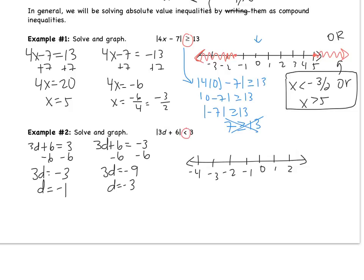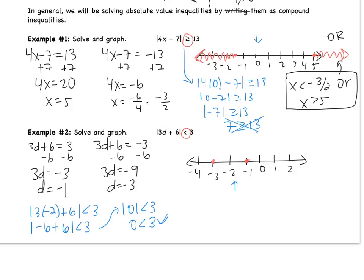Looking at the inequality sign — no equal sign, so both are open circles at negative 1 and negative 3. Pick a test point in between: negative 2. Substituting: the absolute value of 3 times negative 2 plus 6 is less than 3. That gives the absolute value of negative 6 plus 6, which is the absolute value of 0, which equals 0. So 0 is less than 3 — true. That means shade in between, where negative 2 is.